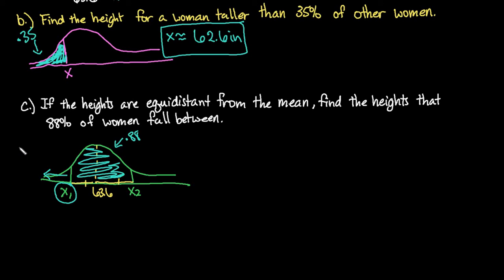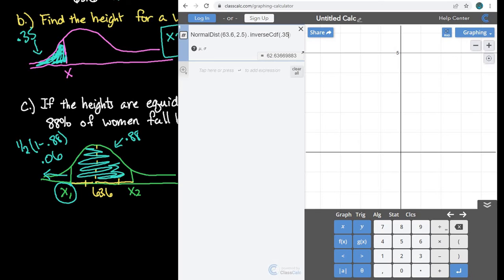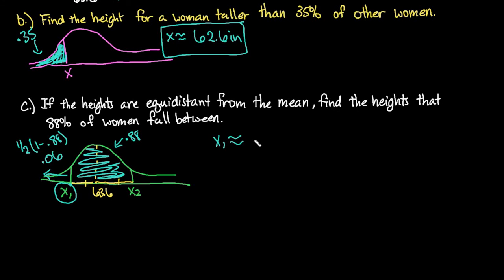Our area to the left of this one would end up being found by 1 half, 1 minus 0.88, which ends up giving me 0.12, and so I would end up with 0.06. So the area to the left of x1 is 0.06. If you wanted to, you could come in here and you could just plug in 1 half times, and then you can plug in your parentheses, 1 minus 0.88. Or if you can easily do the math, you could have just typed in the 0.06. Either way, you get the same answer. It's just a matter of how difficult the numbers are to work within your head. So we would see that it's 59.7 inches would be our lower height.